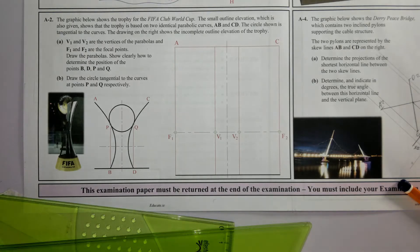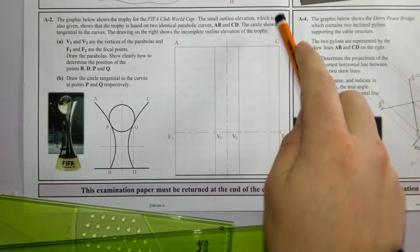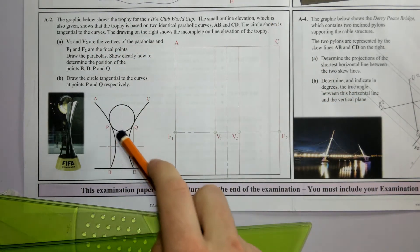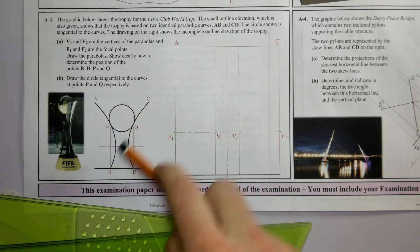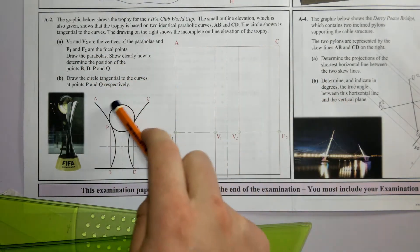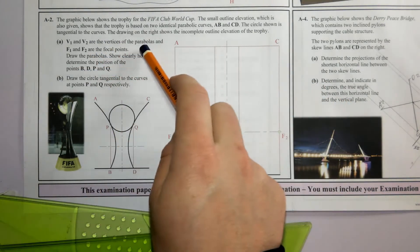So this is 2015 question A2. We have a graphic that shows the World Cup trophy based on two parabolas AB and CD. The circle is tangential to the curve. V1 and V2 are the vertices of the parabolas, F1 and F2 are the focal points.